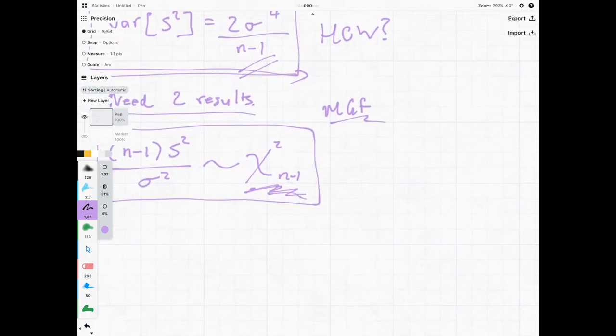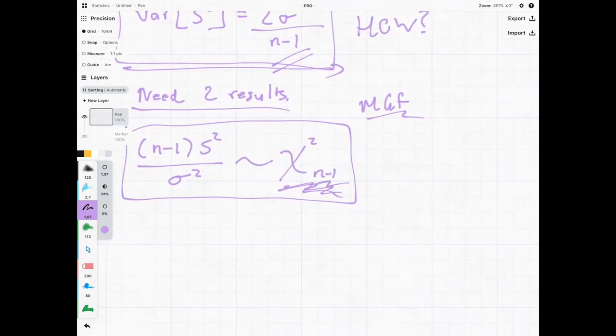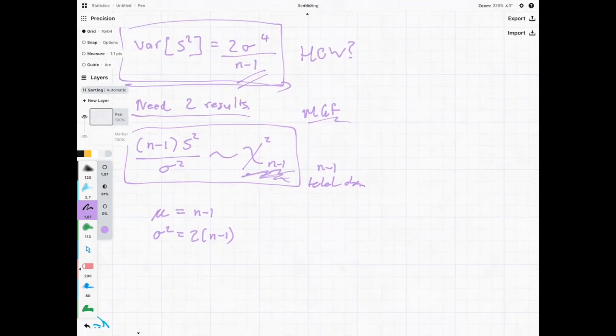Let's use that of our chi-squared and we see chi-squared n minus one where n minus one is, well n is equal to the total observations, which means that the mu in this situation is going to be equal to n minus one and sigma-squared is equal to two times n minus one.